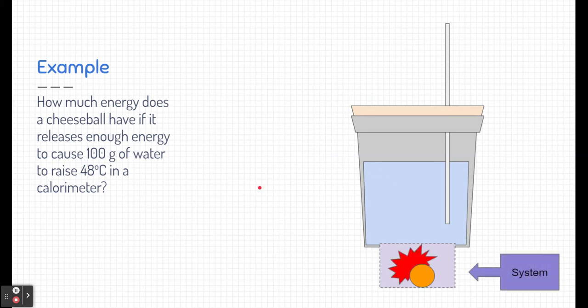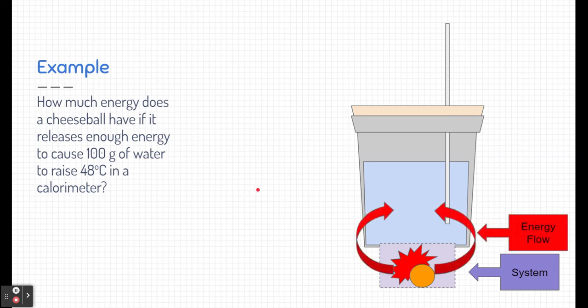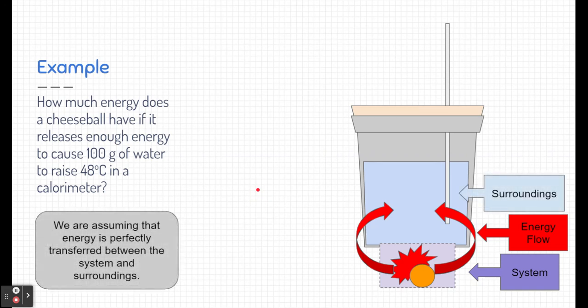Now, here, our system is the cheeseball. This is ultimately what we're interested in, but we're going to have to figure out the system's amount of enthalpy in a roundabout way by using the water. Remember, our cheeseball is releasing energy into the water. So the energy flow is going into our surroundings, which is the water and the thermometer.